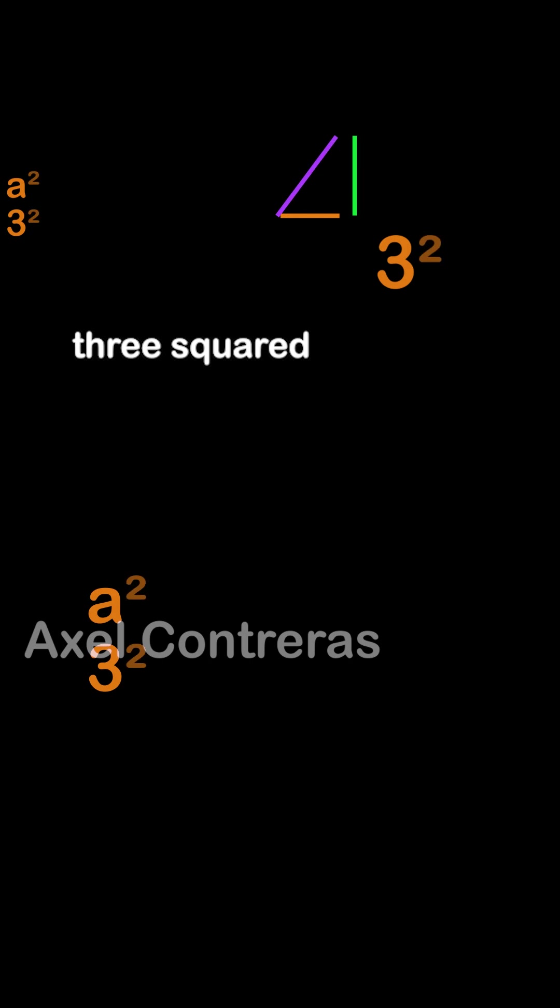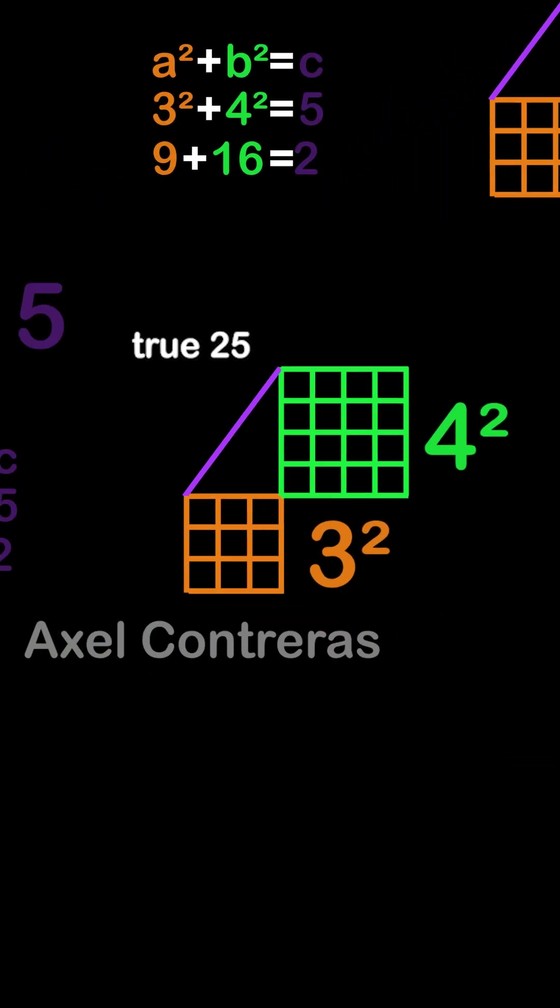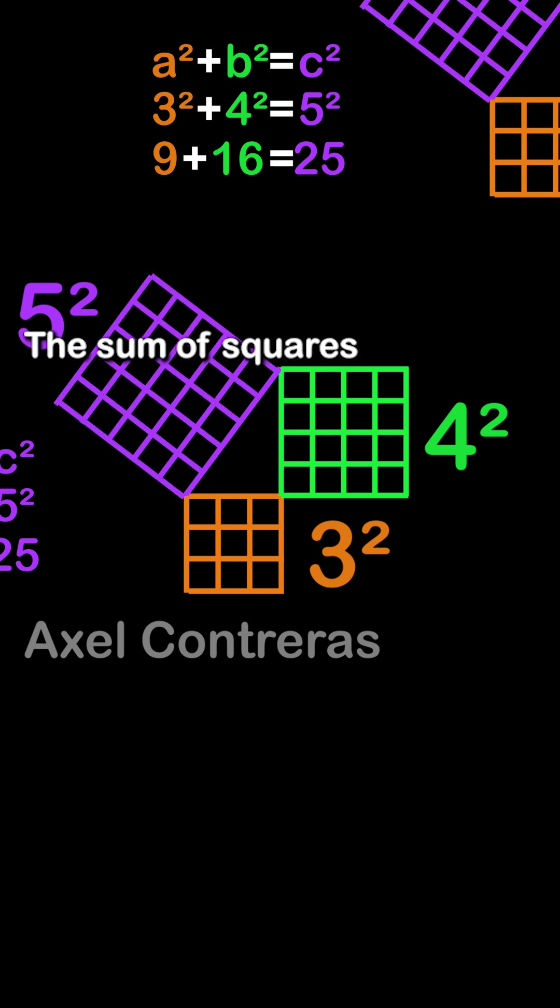Three squared, four squared, five. Nine and sixteen, they add up true. Twenty-five through all of time, the sum of squares in perfect rhyme.